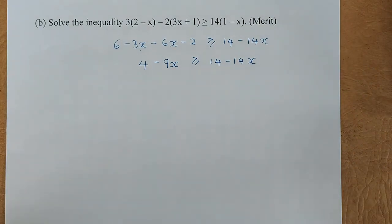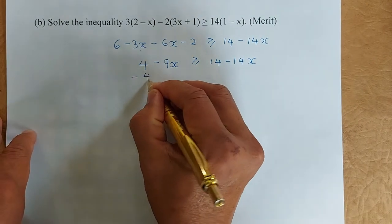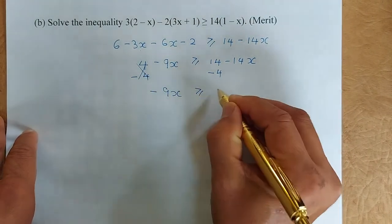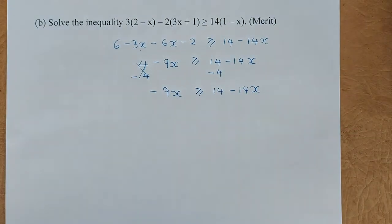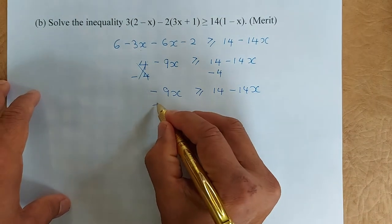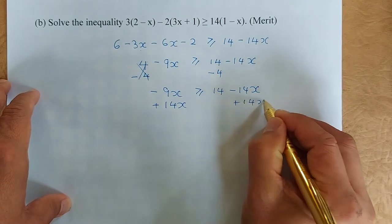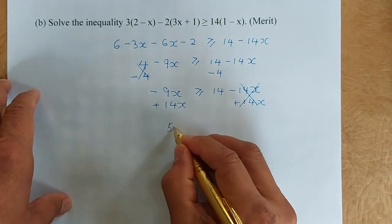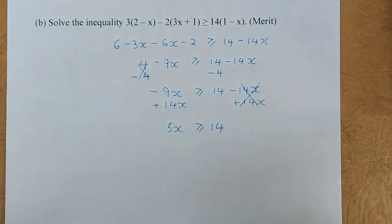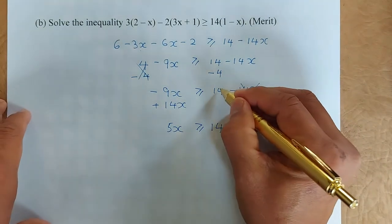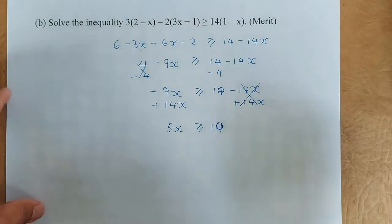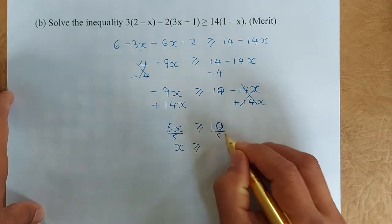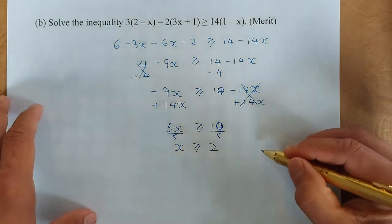Now we minus 4 on both sides — minus 4 on the left, minus 4 on the right — so that cancels out and we are left with minus 9x is greater than 14 minus 14x. Next, add 14x on both sides: minus 14x plus 14x cancels, and 14x minus 9x gives 5x is greater than 10. Divide both sides by 5 and x is greater than 2. And that will give you a merit.